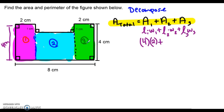For Rectangle 2, we have to do a little bit of work to find its dimensions. We know that the top of Rectangle 1 is 2 centimeters, which means the bottom must also be 2 centimeters, since opposite sides in a rectangle are always congruent. The same applies to Rectangle 3 — the top is 2 centimeters, so the bottom is 2 centimeters. We also know the entire bottom of the figure is 8 centimeters, so the length of Rectangle 2 must be 4 centimeters, because 2 plus 4 plus 2 equals 8.